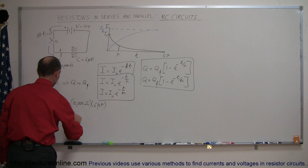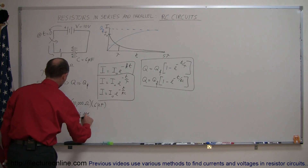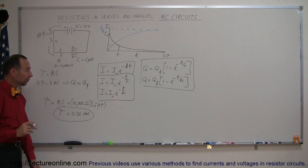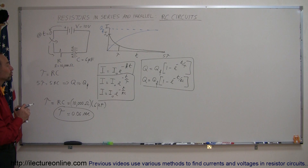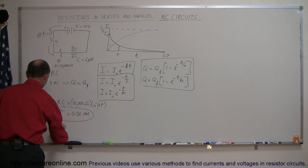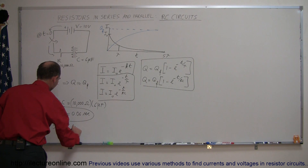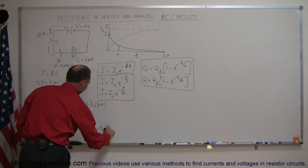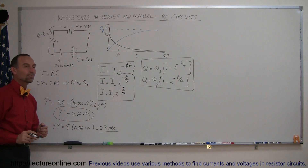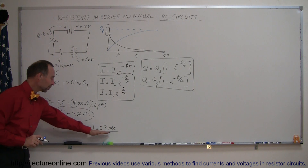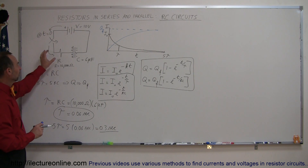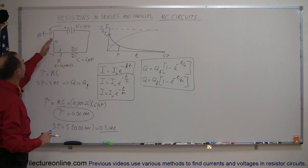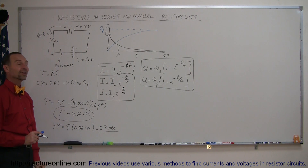That equals 0.06 seconds. So this means that after 0.06 seconds, the capacitor would be about 63% charged. After five time constants — 5 times 0.06 seconds, which equals 0.3 seconds — the capacitor is more than 99% charged. So after 0.3 seconds, three-tenths of a second, this capacitor with this resistance in the circuit would be more than 99% charged after the switch is closed.